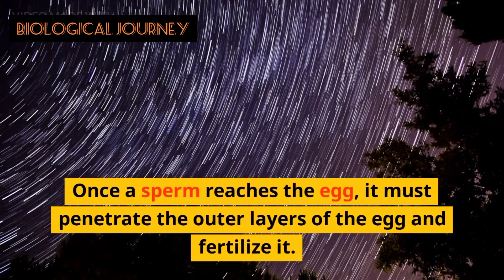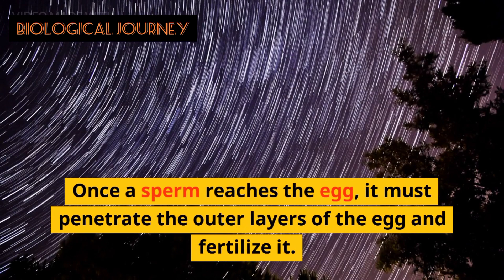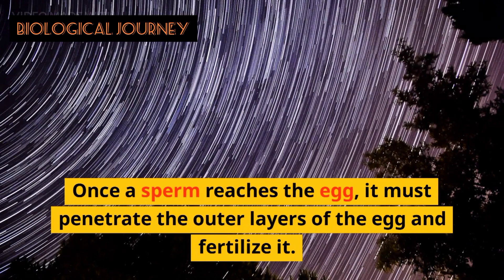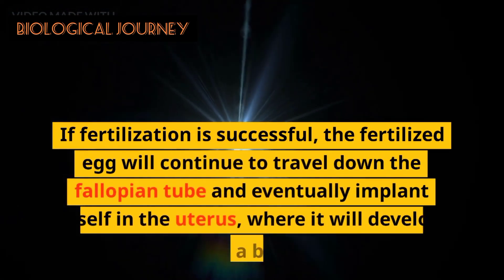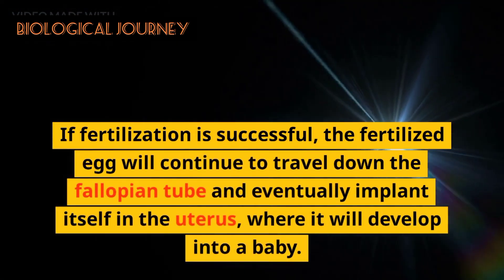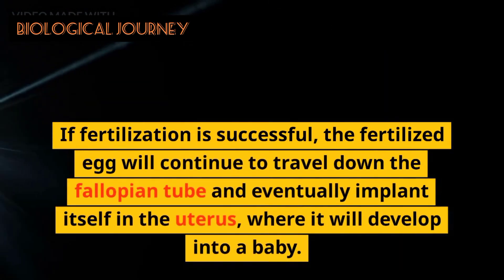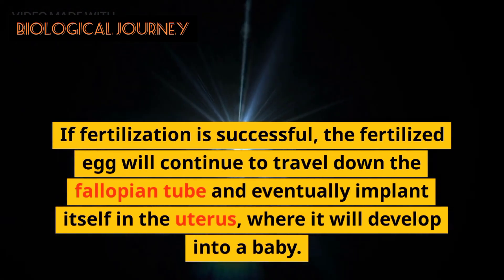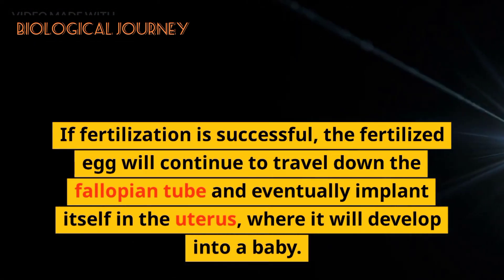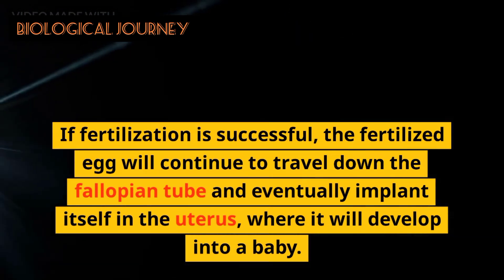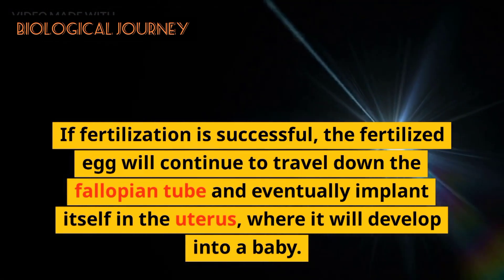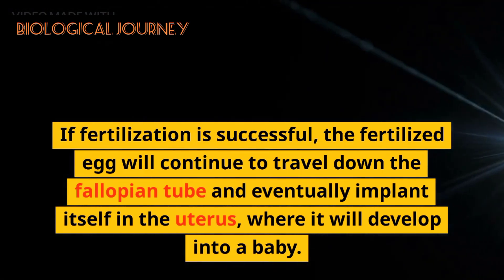Once a sperm reaches the egg, it must penetrate the outer layer of the egg and fertilize it. If fertilization is successful, the fertilized egg will continue to travel down the fallopian tube and eventually implant itself into the uterus, where it will develop into a baby.